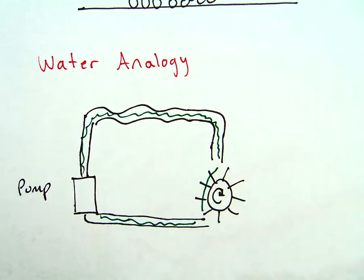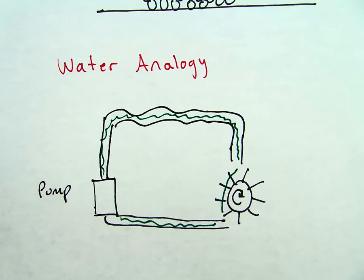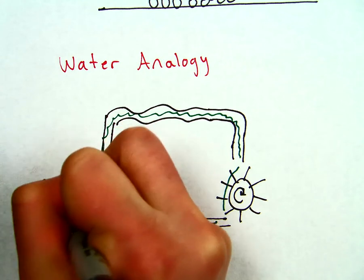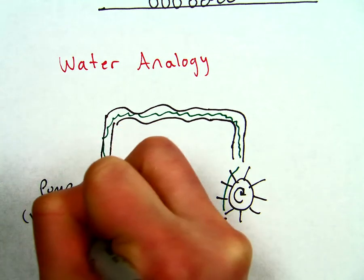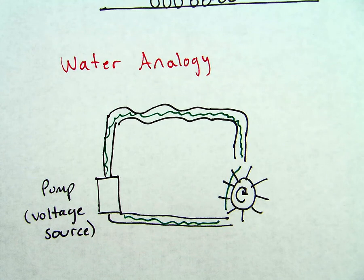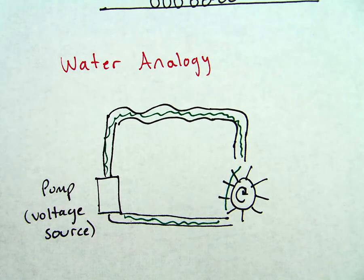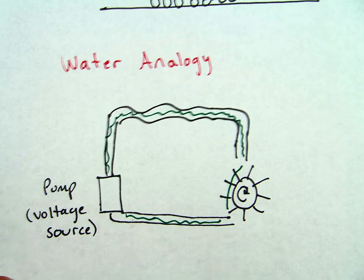So our pump is analogous to our voltage source. Without the pump, this system would not work. Without the pump, there'd be no way for the water to be pushed up through the pipes. And that leads us to our pipes.